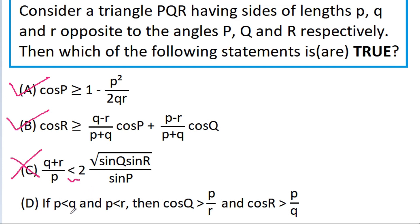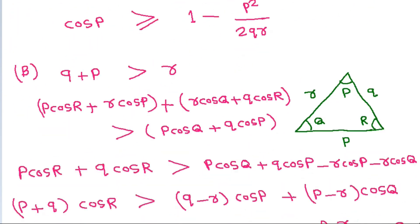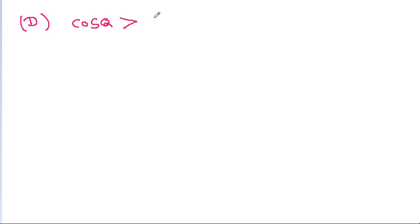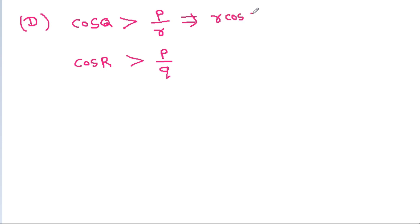For option D, if P < Q and P < R, then it is given that cos Q > p / r and cos R > p / q. From the first inequality we get r cos Q > p (equation 1), and from the second inequality we get q cos R > p (equation 2).